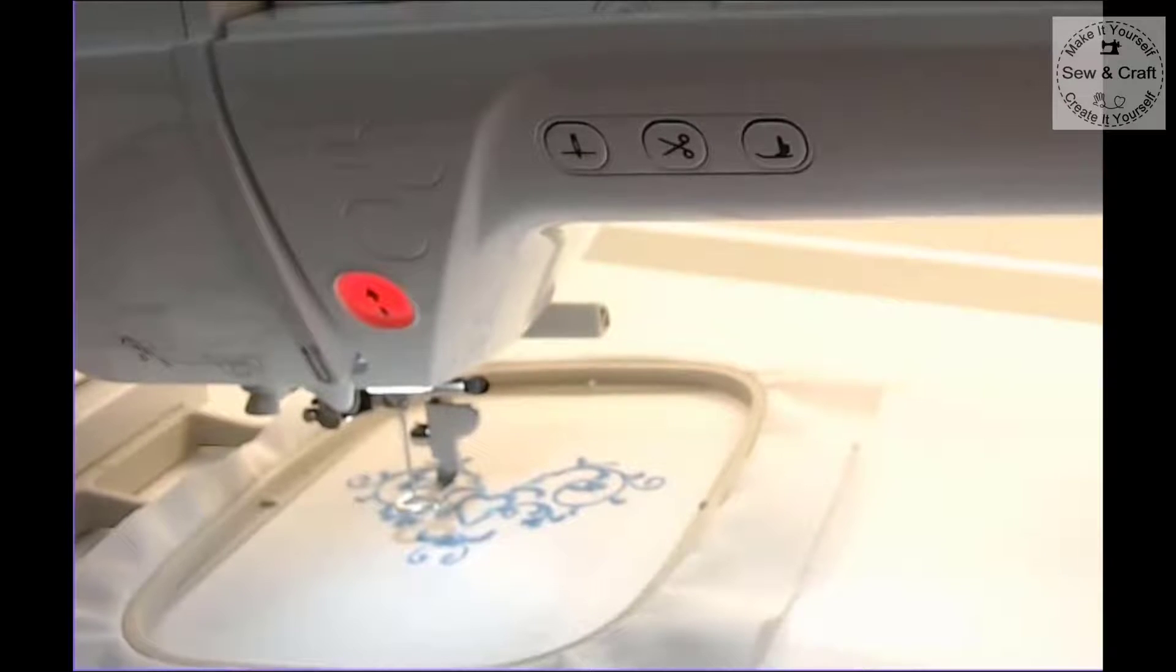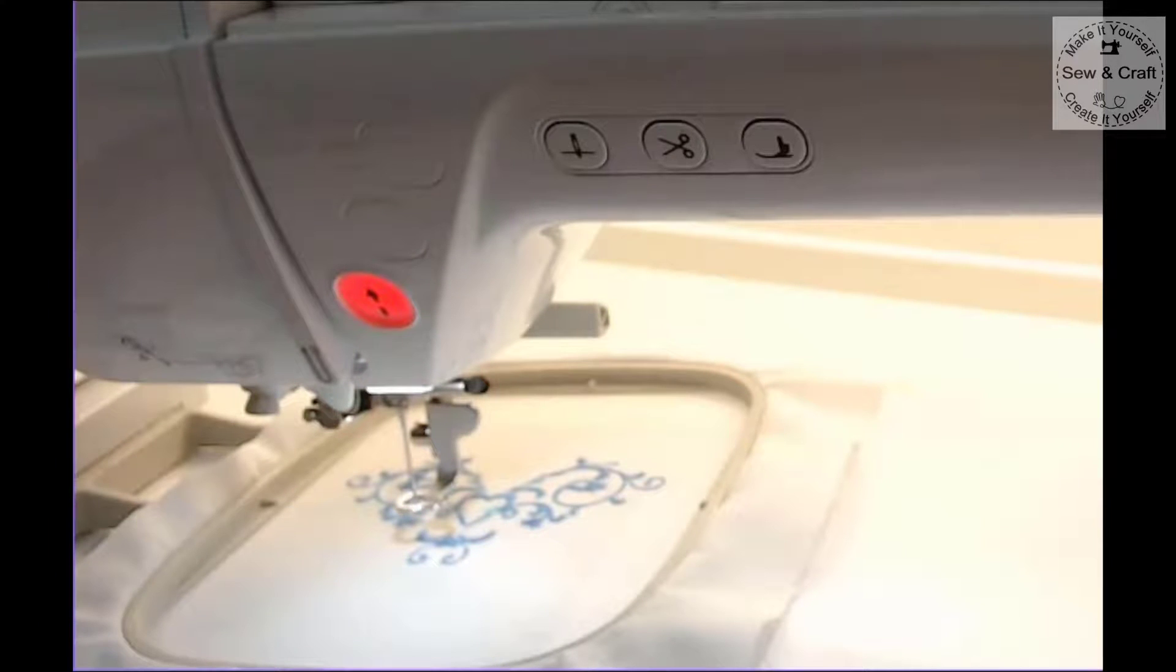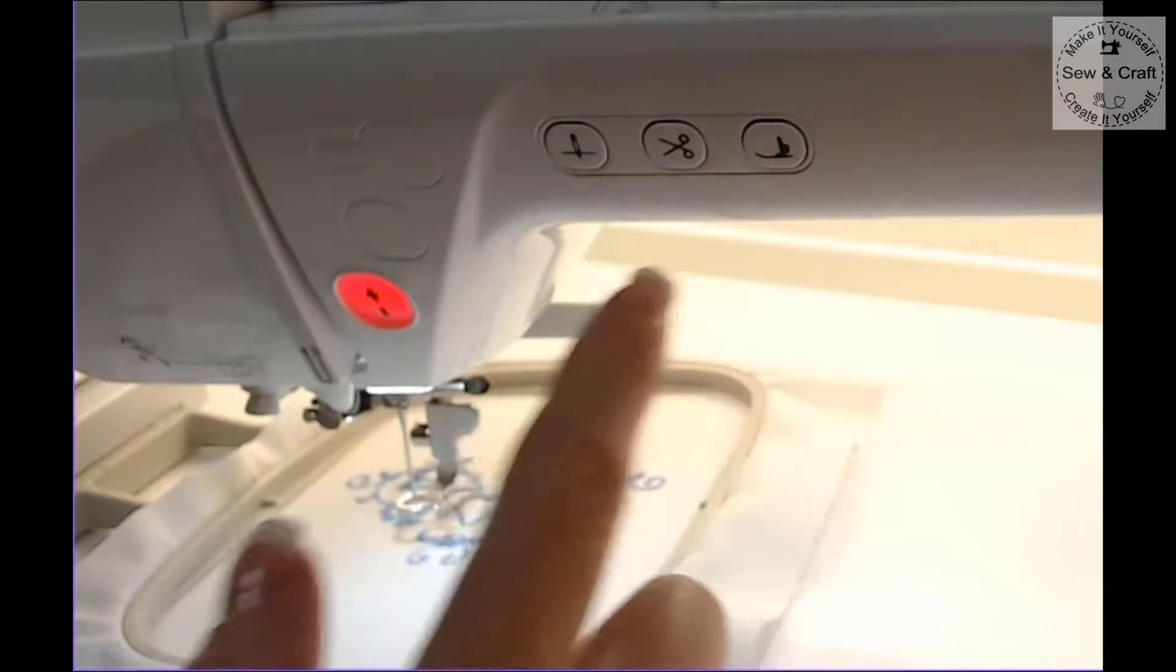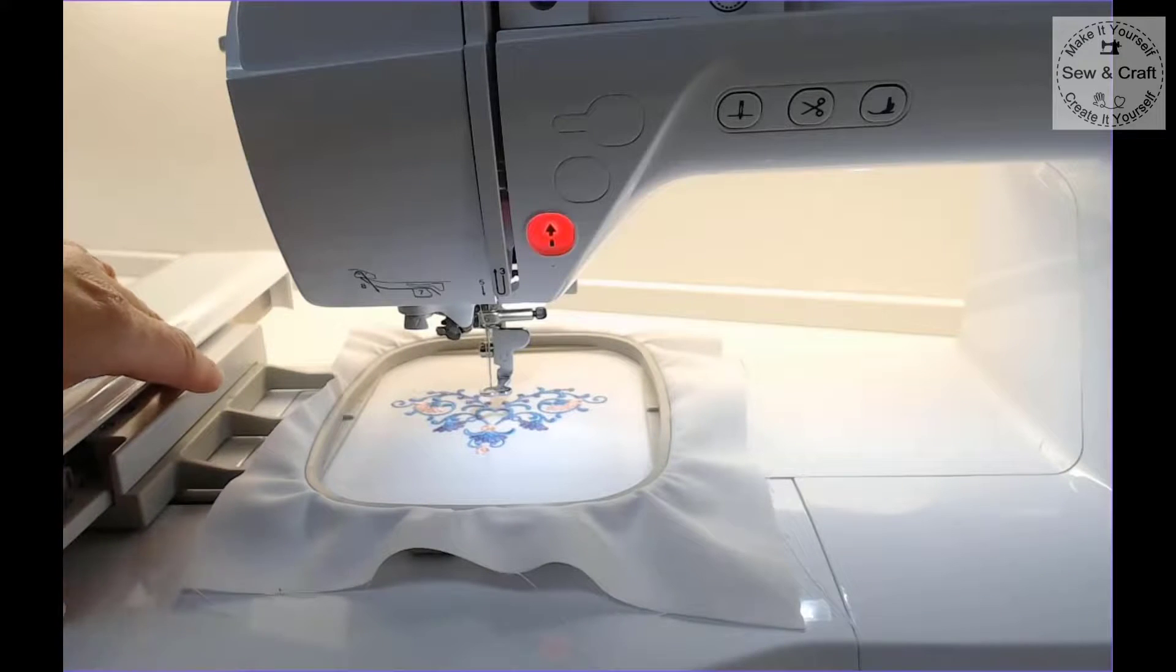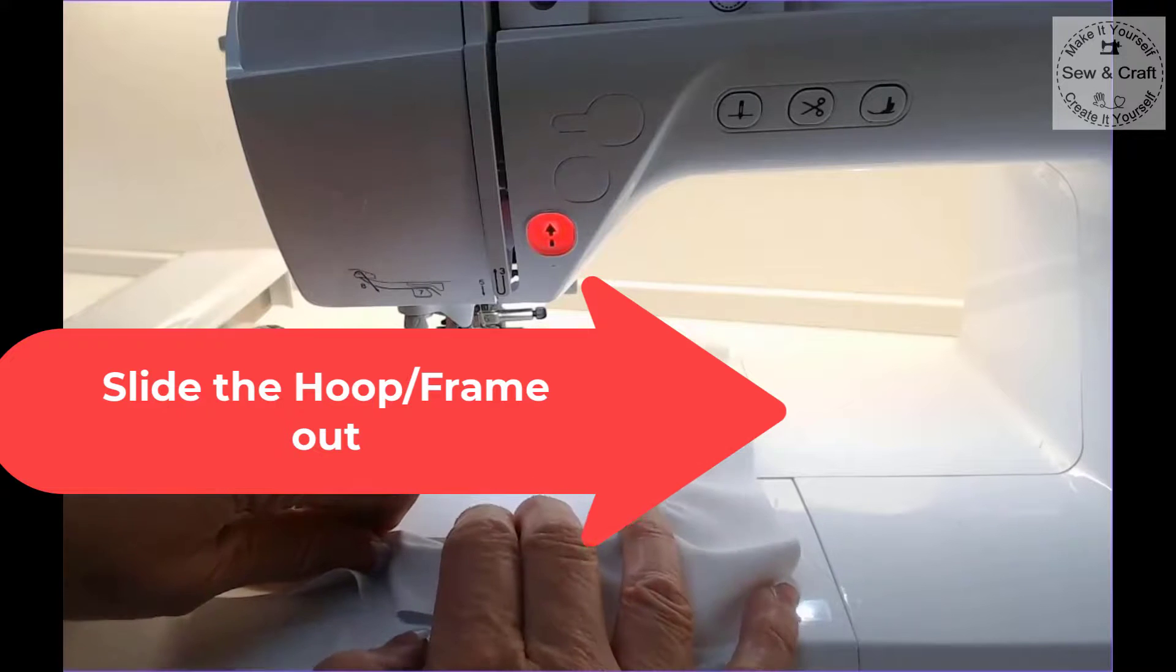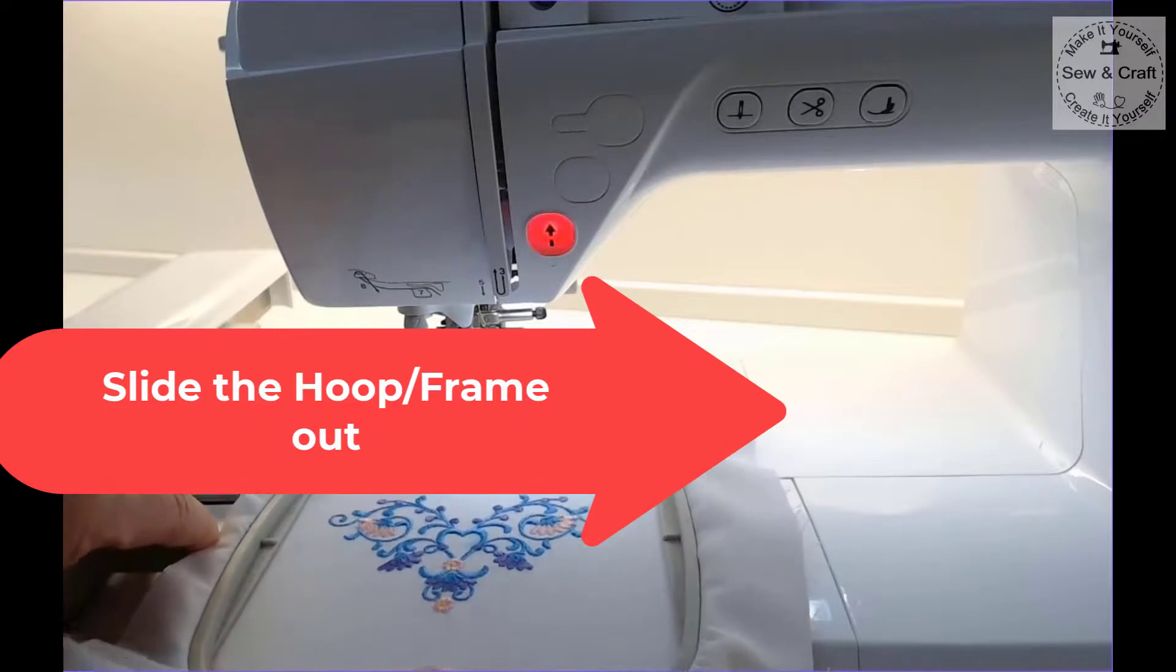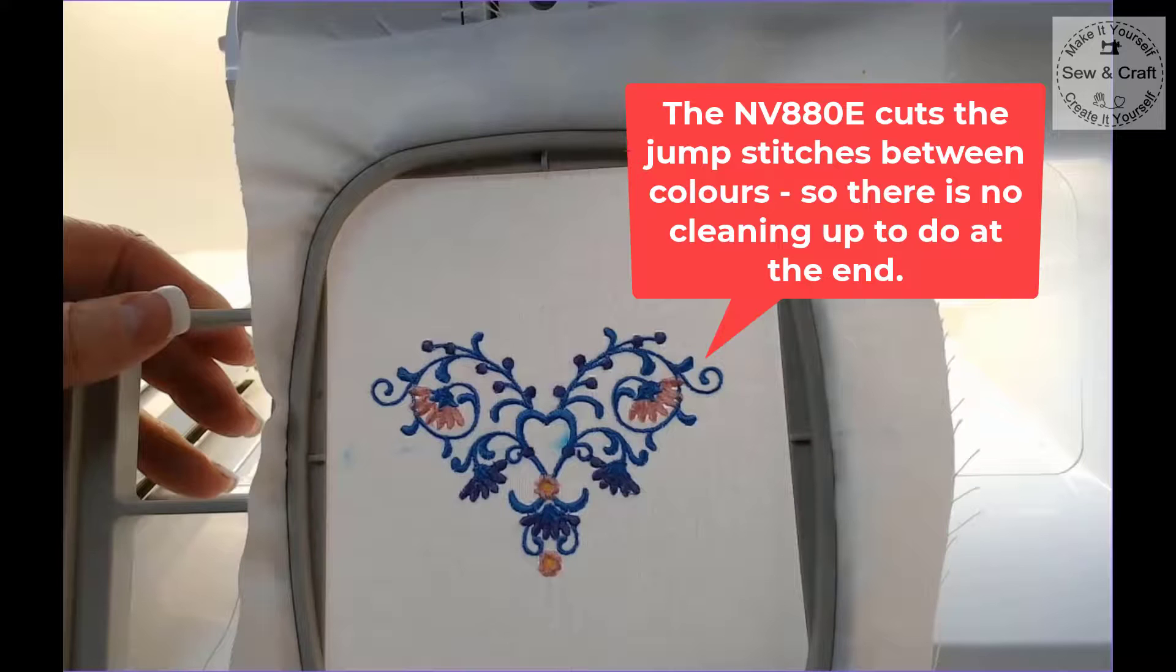Once the machine has completed the first color it will cut the threads off both at the top and at the bottom, so it's all nice and neat. Then you'll be ready to thread the next color in the sequence on your screen. Lower the presser foot and press the little green button to start with the second color. Now that I've completed all four colors and the machine has stopped, I simply unlock the hoop lever and slide the hoop out. Here I have my beautifully embroidered design. The NV880E cuts all the jump stitches in between the colors so you don't have to tidy anything up afterwards either.